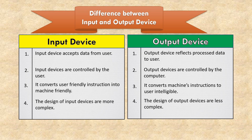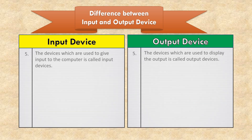The design of input devices is more complex, while the design of output devices is less complex. The devices which are used to give input to the computer are called input devices. The devices which are used to display the output are called output devices.